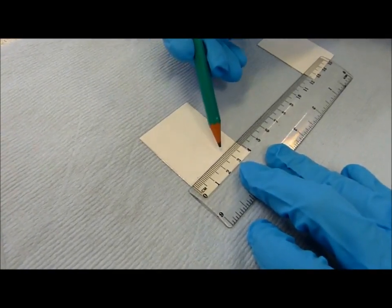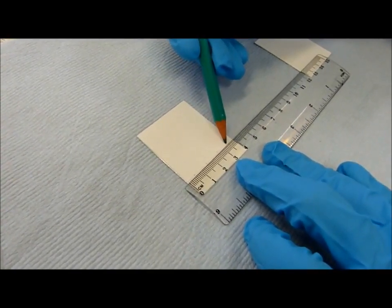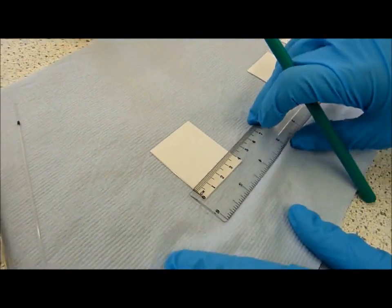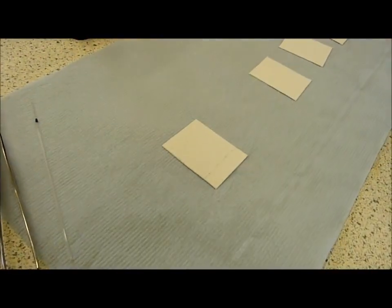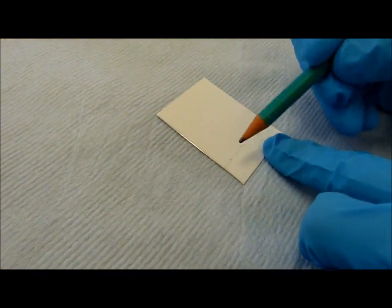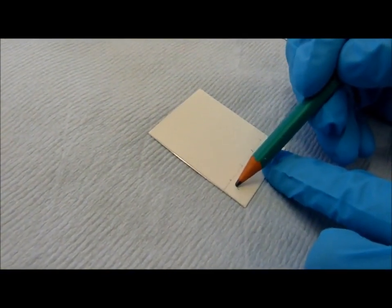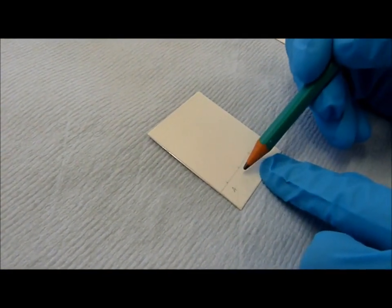Lightly mark four equidistant positions at least 1cm away from the edge of the plate. Label each position with a letter to identify your known and your unknown compounds.